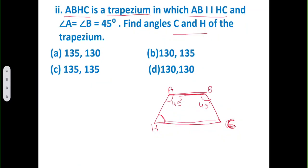Let me discuss this question from the very beginning. The trapezium is ABCH, drawn here, in which AB is parallel to HC. We have been given that angle A equals angle B and each of these is 45 degrees. We need to find the values of angle C as well as angle H.